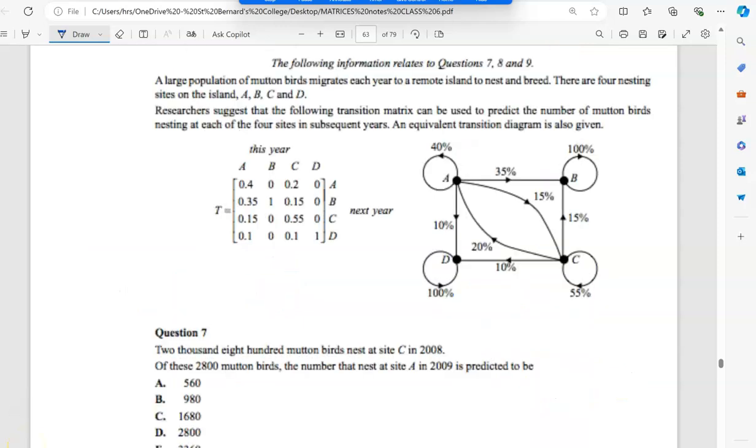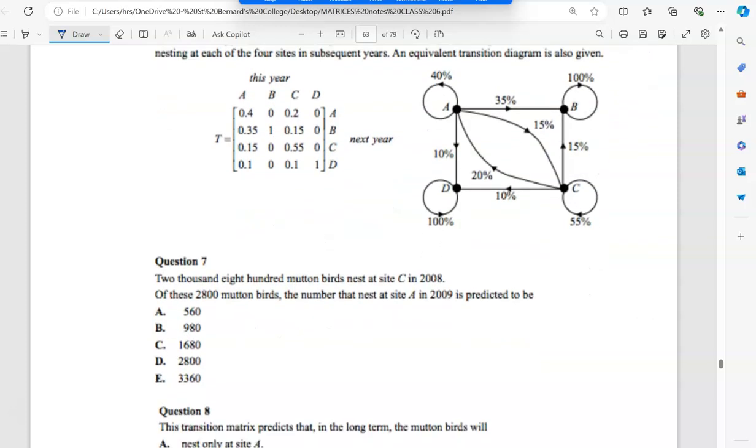So a large population of martin birds migrate each year to a remote island and nest and breed. There are four nesting sites, A, B, C, and D, and researchers suggest that they follow this transition matrix. So it says 2,800 martin birds nest at site C in 2008. Of these 2008 martin birds, the number that nest in site A in 2009. So really you want to go from C to A. So if you look up there, C to A is 20%. So because they say of these, you want 20% of 2,800. So that's just 0.2 times 2,800. So that's 560. So that's just pretty easy.